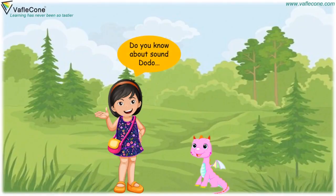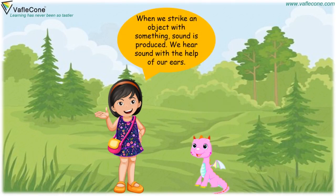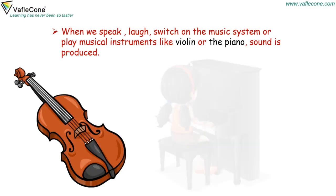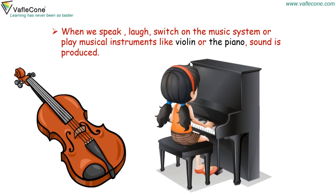Do you know about sound, Dodo? No, Jia. Let's discuss. When we strike an object with something, sound is produced. We hear sound with the help of our ears. When we speak, laugh, switch on the music system, or play musical instruments like violin or piano, sound is produced.